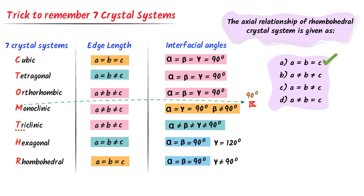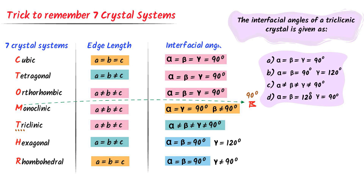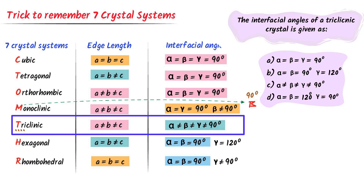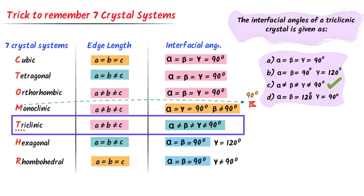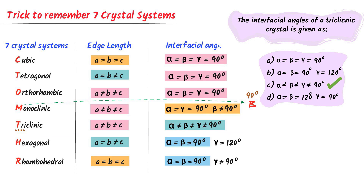Fourth MCQ: 'The interfacial angles of a triclinic crystal system are given by?' — alpha is not equal to beta, beta is not equal to gamma, and they are all not equal to 90 degrees. Thus, using this trick, we can easily remember the seven crystal systems and crack any exam question using this super easy trick.